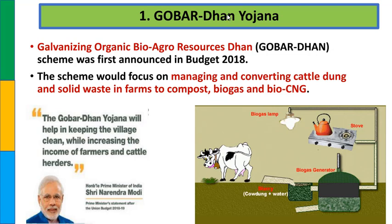आज के lecture का सबसे पहला scheme है गोबर धन योजना. GOBAR का full form है - Galvanizing Organic Bio Agro Resources Dhan. मतलब कि जो भी organic bio agro resources होते हैं, उनको हम galvanize करने का काम करते हैं. इसको Budget 2018 में announce किया गया था.